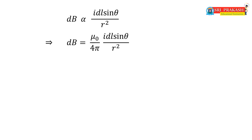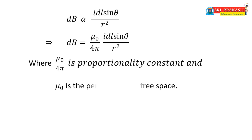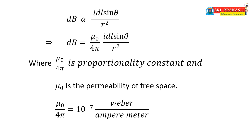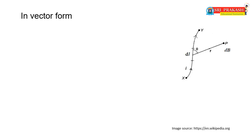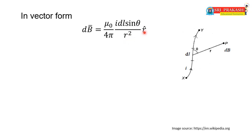Fourth factor: if the point is very near to the current-carrying conductor, the magnetic induction is more; if the point is farther away, it decreases. That is, dB is inversely proportional to the square of the distance R, so dB ∝ 1/R². Combining all four factors: dB ∝ I·dL·sin θ / R². Introducing the proportionality constant, dB = (μ₀/4π) · (I·dL·sin θ / R²), where μ₀/4π = 10⁻⁷ and μ₀ = 4π × 10⁻⁷ Weber per ampere-meter.